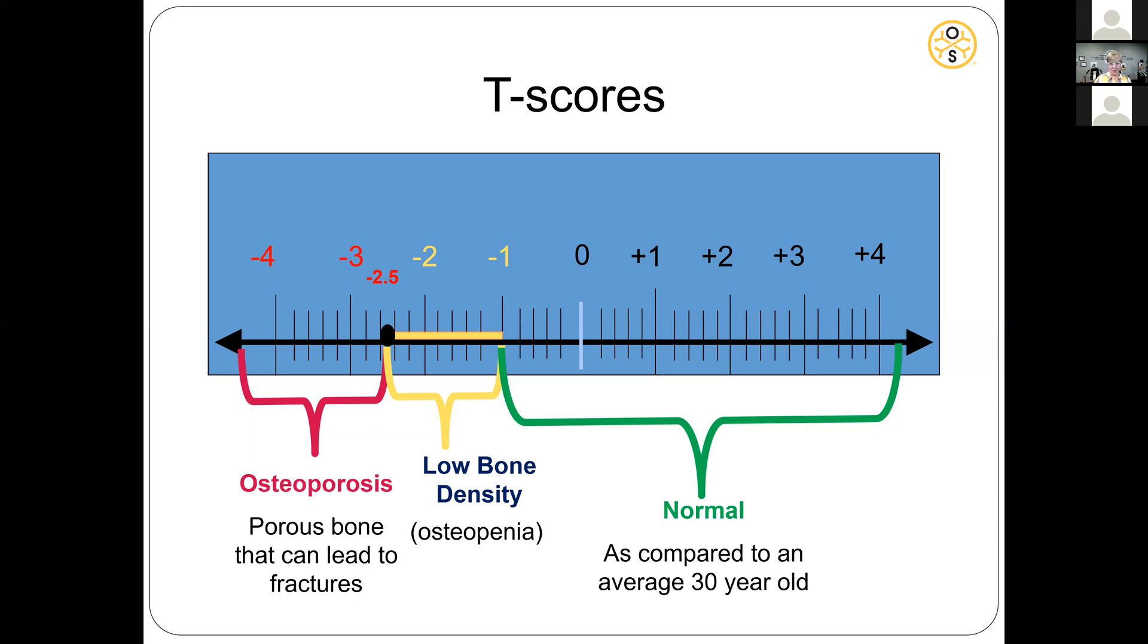If you have a positive one, you essentially have 10% more than normal bone density. Or negative 2.5, which is the cutoff for osteoporosis, basically equates to about a 25% bone loss.